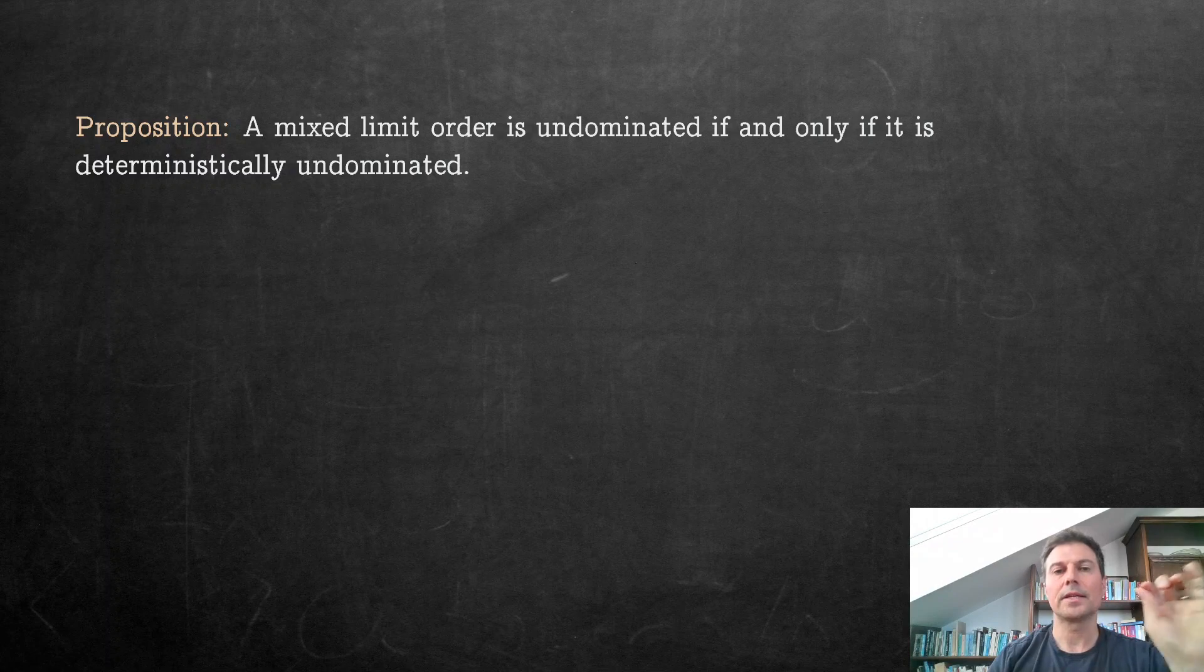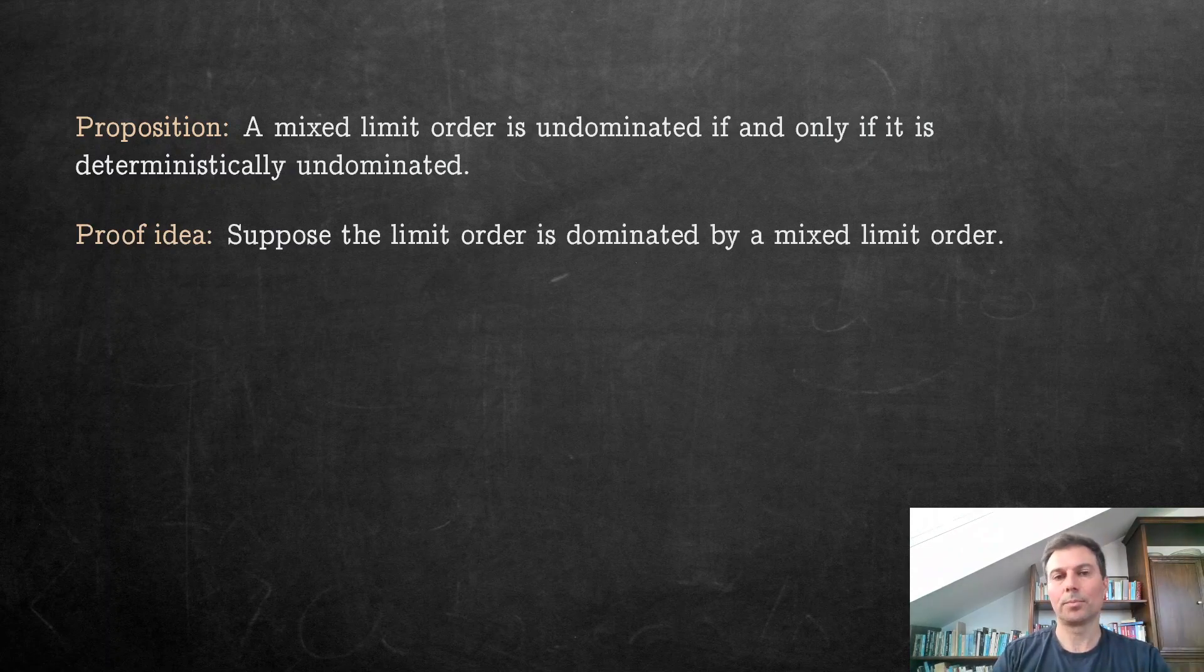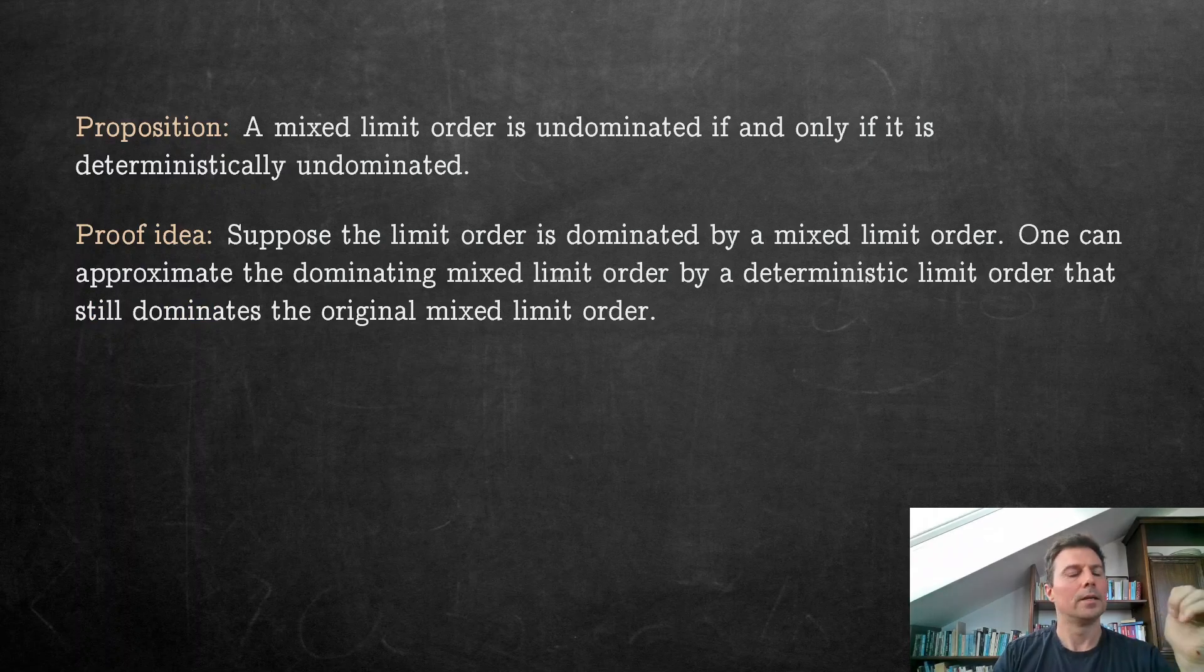But then the key result is this: that a mixed limit order is undominated in our setting if and only if it is deterministically undominated. Which then means that there is no scope for ambiguity aversion to explain anything else than subjective expected utility already does. The proof idea is this: Suppose you have a limit order that is dominated by a mixed limit order. One can approximate the dominating mixed limit order by a deterministic limit order that still dominates the original mixed limit order.